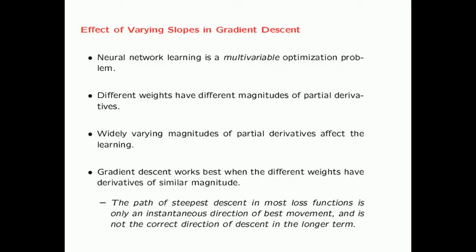As you have seen in previous lectures, neural network learning is a multivariable optimization problem. During the learning process, we use backpropagation in order to compute the derivative of the loss function with respect to the weights in different layers. Unfortunately, these derivatives with respect to different weights can often have very different magnitudes. And widely varying magnitudes of the partial derivatives affect the learning.